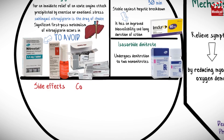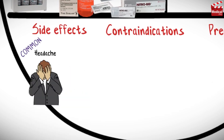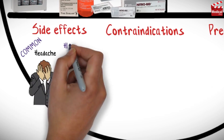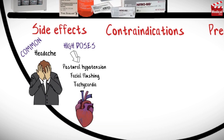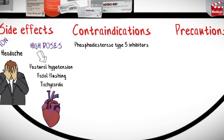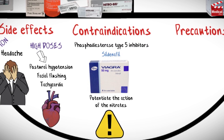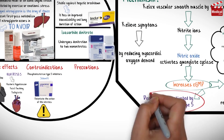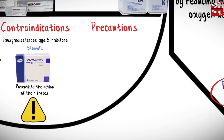Oral isosorbide dinitrate undergoes nitration to two mononitrates. Regarding side effects and contraindications: headache is the most common adverse effect of nitrates, and high doses can also cause postural hypotension, facial flushing, and tachycardia. Phosphodiesterase type 5 inhibitors such as sildenafil potentiate the action of nitrates by inhibiting the enzyme that deactivates cGMP, so this combination is contraindicated.